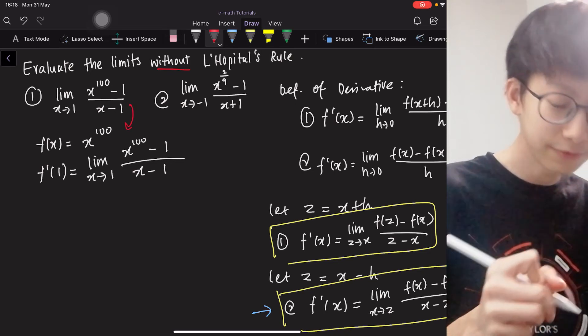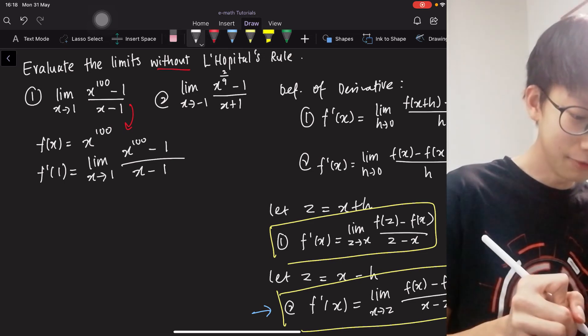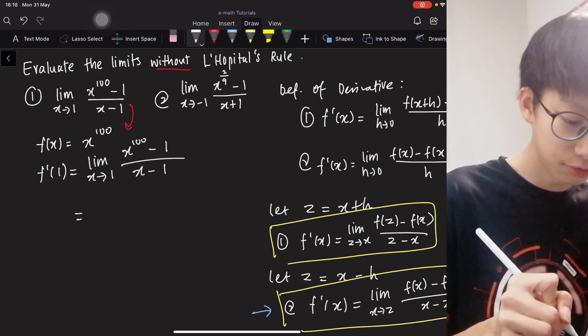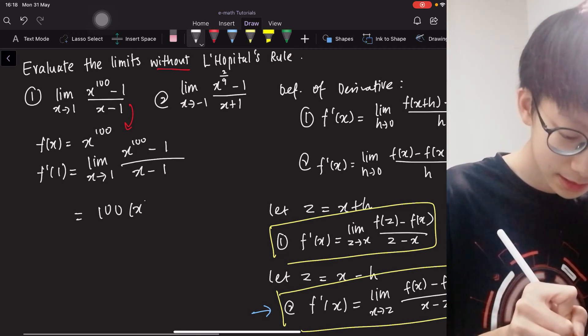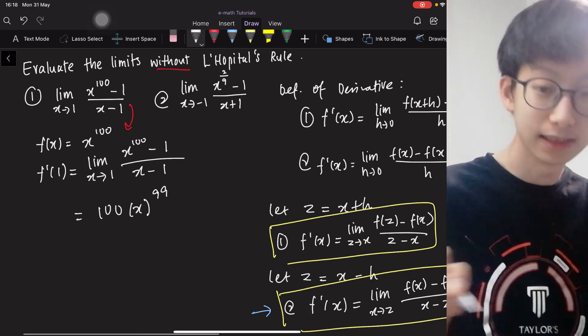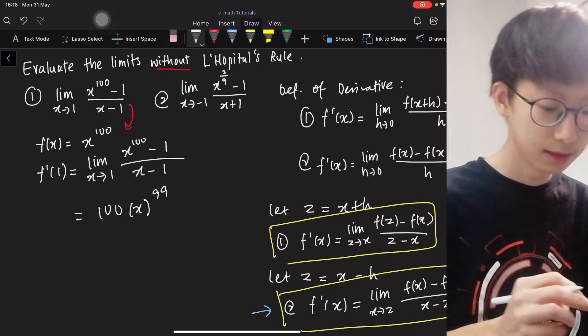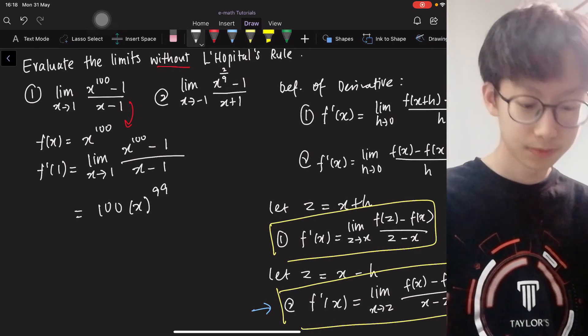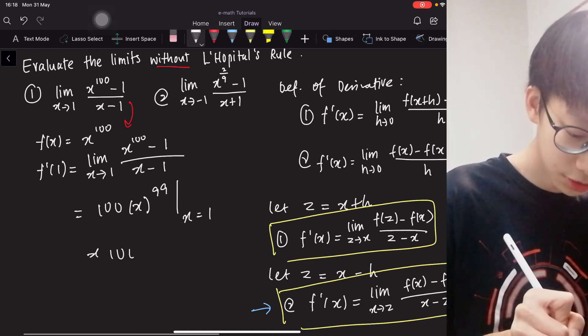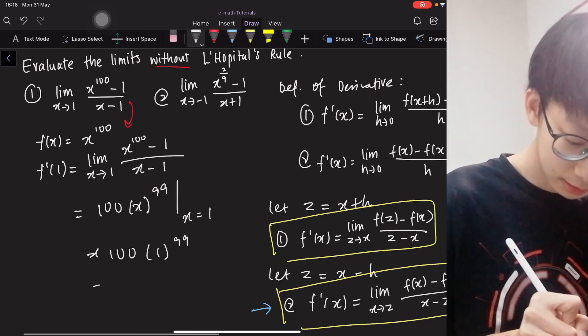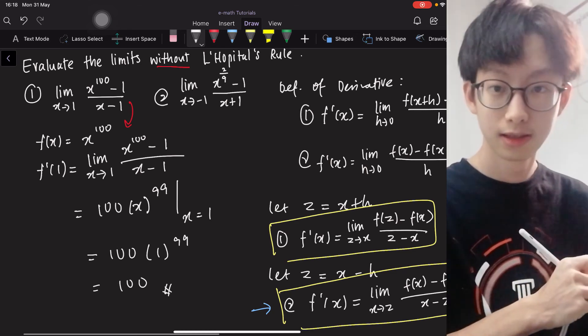So very conveniently, we can just say that this is equals to, we differentiate x to the 100, we get 100x to the 99. Remember, the power rule, bringing down the power, power minus 1. Then at x equals to 1. So it is 100(1)^99, which is 100.